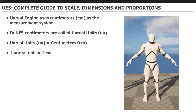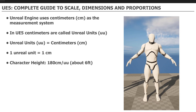Now that you know the measurement system in Unreal Engine, the grid snap sizes, and how to use the measuring tool, you need a starting point to begin creating the architecture and environments. Everything should start from the player. The average character height in Unreal is 180 centimeters — roughly about six feet. That is your starting point.